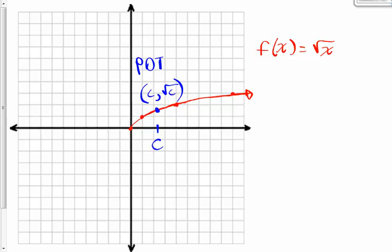I'll label it POT — that's the point of tangency. Then I'll have another arbitrary point. I'll call that x value just x, so that this green point has x as its x-coordinate and the square root of x as its y-coordinate. What I want to do is look at the slope of the secant line connecting the blue and the green point, and then take the limit as the green point gets closer and closer to the blue point.